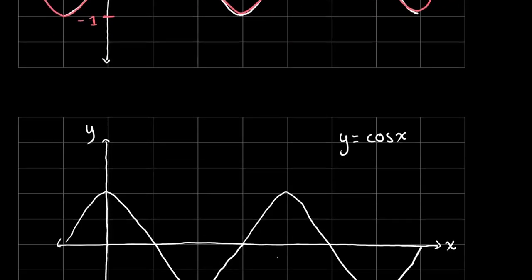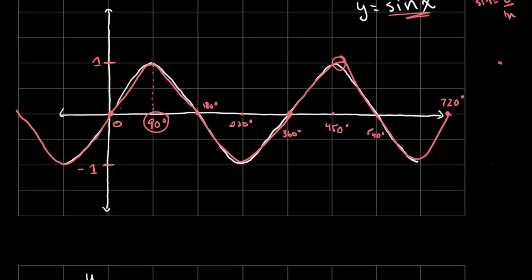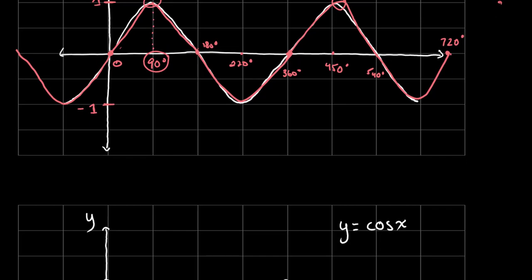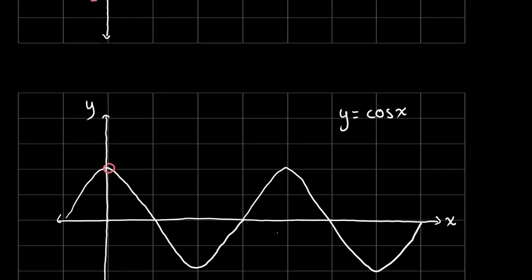Now let's look at the graph of y equals cosine of x. Right off the bat you probably notice it's very similar to the graph of y equals sine x — it's just shifted a bit. For example, the peak of sine is at 90 degrees, while the peak of cosine is at 0 degrees. So: this is 0, this is 90 degrees, this is 180 degrees, this is 270 degrees, and this is 360 degrees.